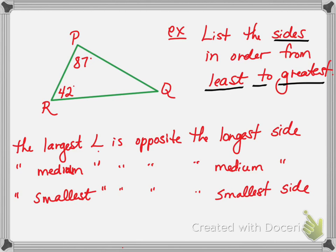Except they're being a little tricky here because we don't know what angle Q is. We're going to have to figure it out. The triangle sum theorem says that the angles of the triangle add up to 180. So we can add 87 and 42 and subtract that from 180. The angle Q is 51.